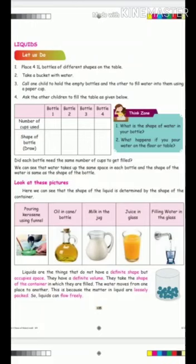Once you have completed, just note down how many cups you have used to fill the water bottle. As you can see in the table, you can record this. Next, pour all the water on the floor or table. Just see whether they have any shape.